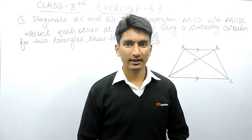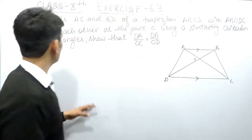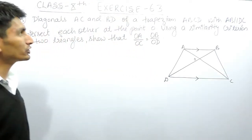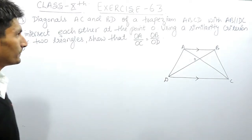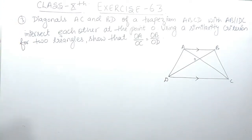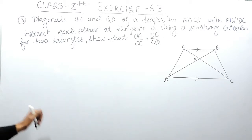Hello everyone. In this video we are going to solve the third question of Exercise 6.3. The question says: diagonals AC and BD of a trapezium ABCD, with AB given parallel to DC, intersect each other at the point O.